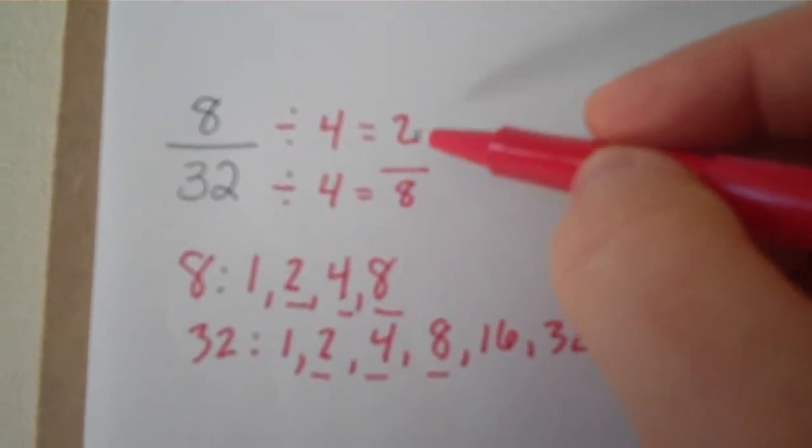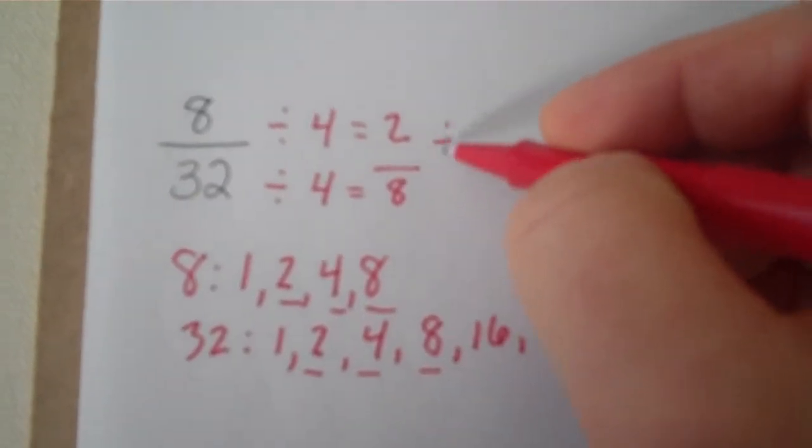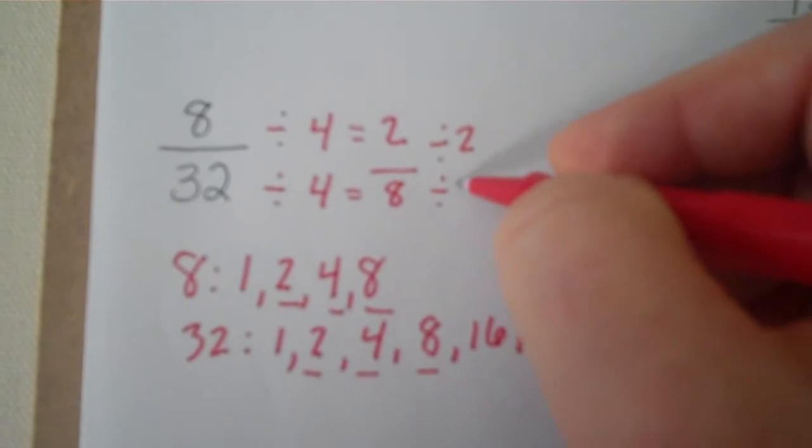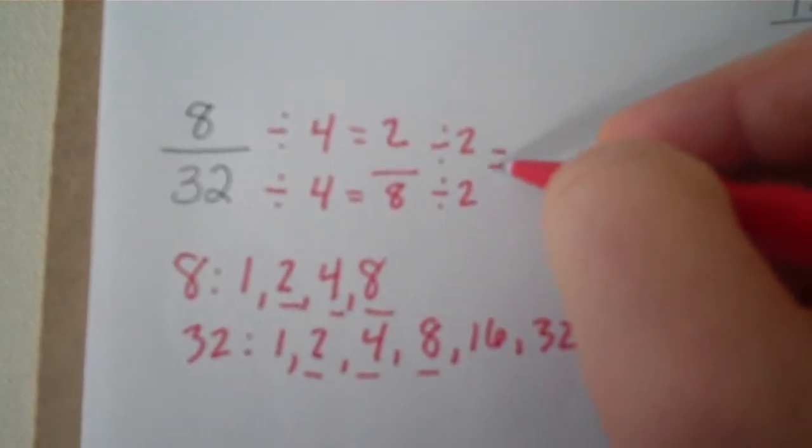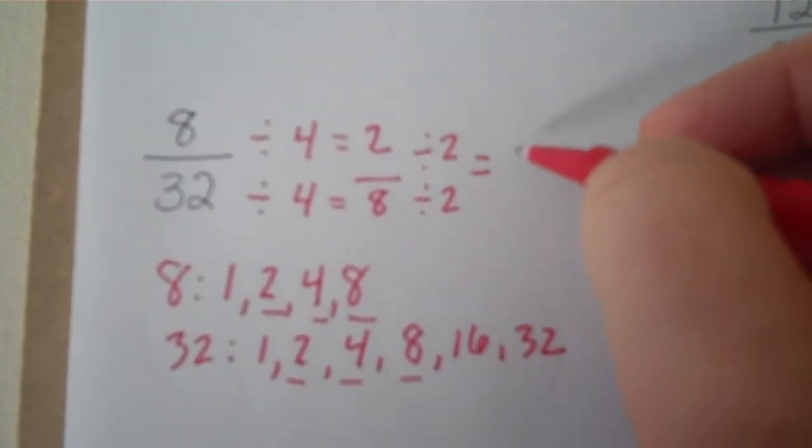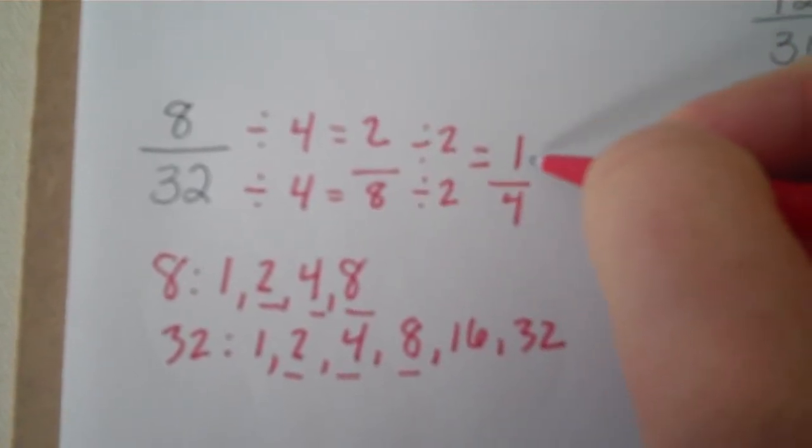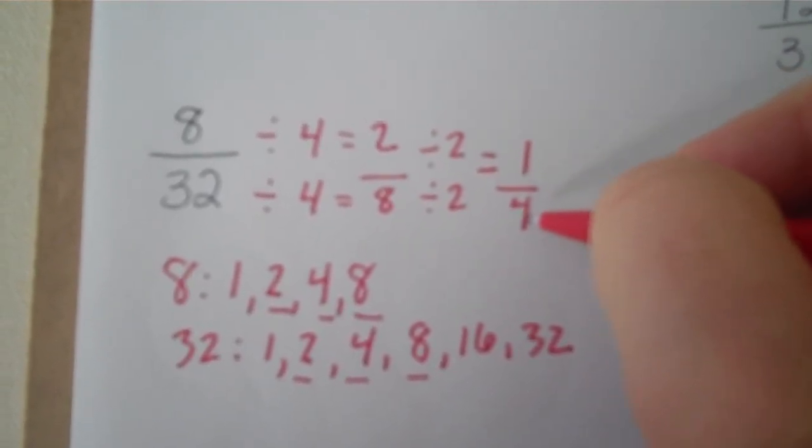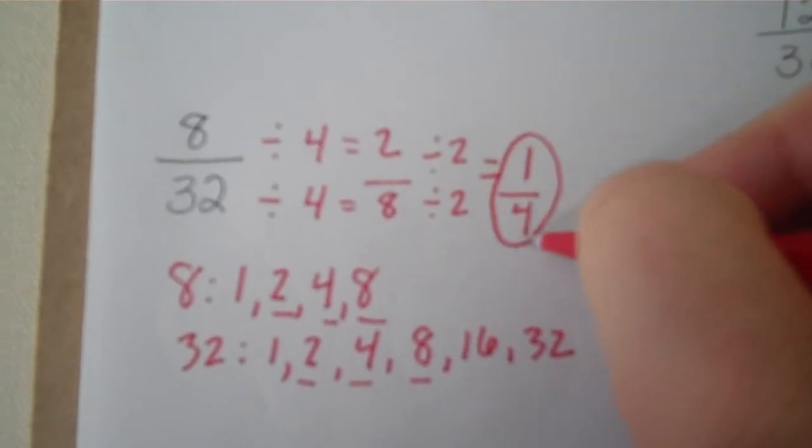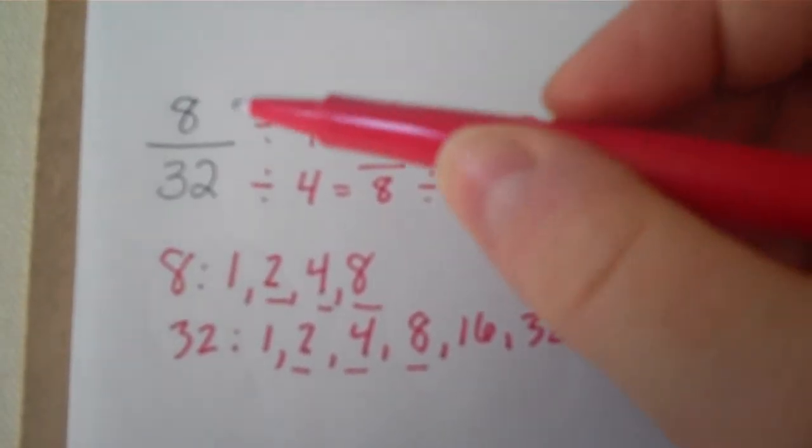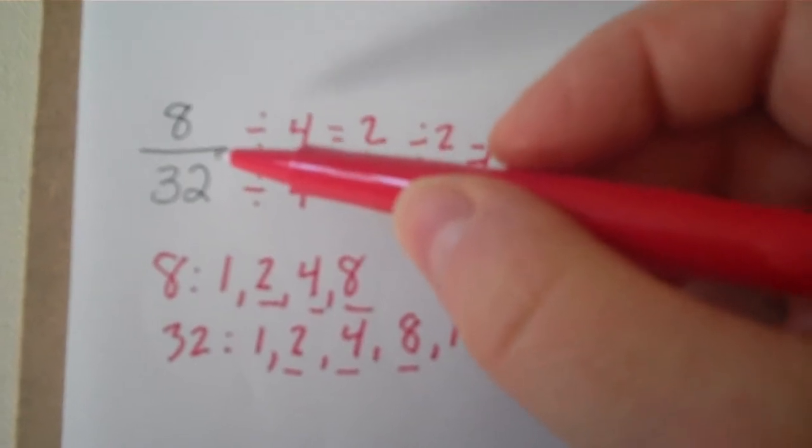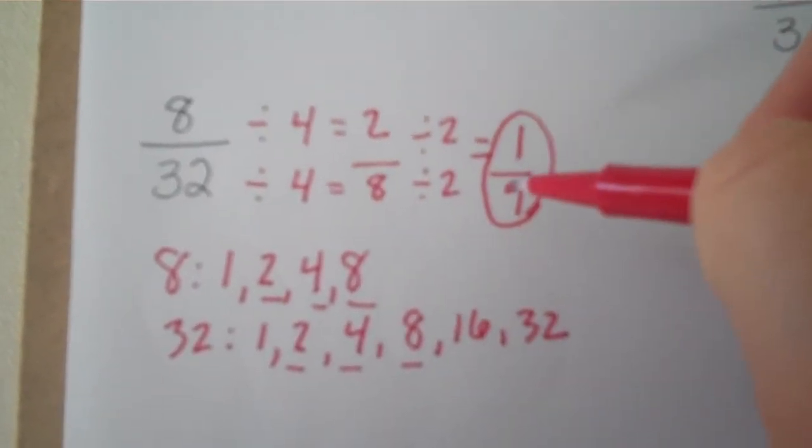Now, I can see that both 2 and 8 can be divided by 2, so I need to do it again. I keep going until I can't do it anymore. 2 divided by 2 is 1. 8 divided by 2 is 4. Now, I can't divide anymore, so I'm done. 1 fourth.